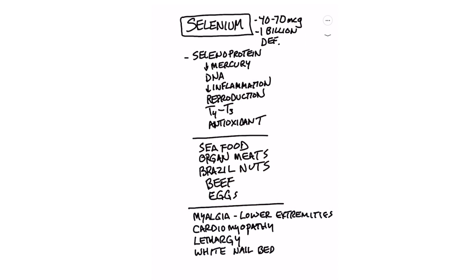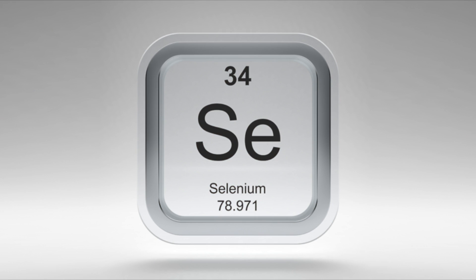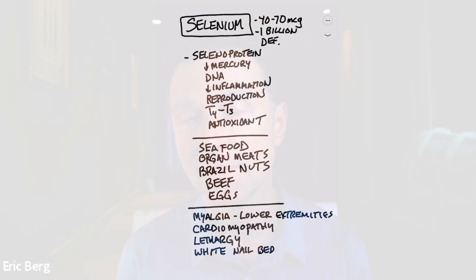Let's move to selenium. Selenium is another trace mineral needed in small amounts — like 40 to 70 micrograms. Over a billion people are deficient in selenium. Selenium is needed in certain proteins like the selenoprotein enzyme, which helps to detoxify mercury. It's also involved in DNA synthesis and decreasing inflammation because it's involved in antioxidants. Selenium is needed for reproduction and for the conversion from T4 to T3 — without selenium you can't convert thyroid hormones, so even though you have enough hormone it can't be activated. Selenium is also a really powerful antioxidant for your liver. You get selenium from seafood, shellfish, organ meats, and Brazil nuts — just one Brazil nut a day will give you enough selenium. Beef, eggs, and beef liver are also good sources.